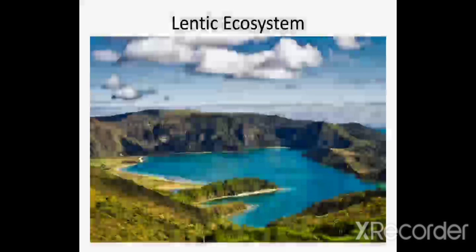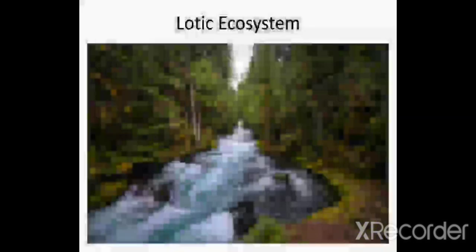Lentic ecosystem comprises of stagnant or still water such as ponds, lakes, and pools. Lotic ecosystem includes moving water such as river and stream.